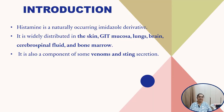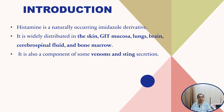Histamine is a naturally occurring imidazoline group compound and it is widely distributed in the skin, GIT mucosa, lung, brain, cerebrospinal fluid and bone marrow. It is also a component of some venoms and sting secretions.